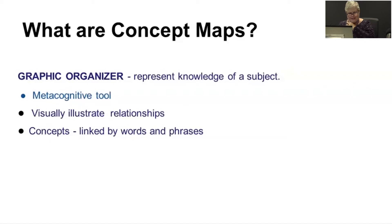Metacognition is when we reflect on our own thinking. A concept map gives you a visual way to reflect on our learning and thinking — it gives you the visual for thinking about how we think. You're going to be able to see that as you work with your own concept map today.